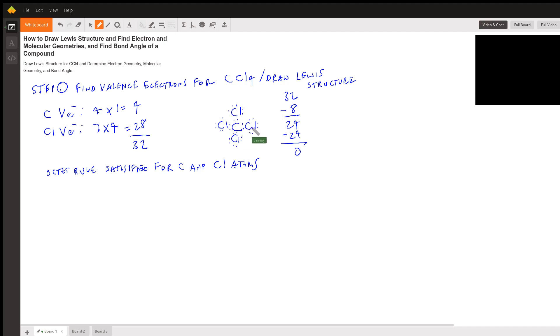So the chlorine, yes. So all the chlorines and the carbon have satisfied the octet rule. So now let's go to step, and then this right here was the Lewis structure. So we actually drew it right there.